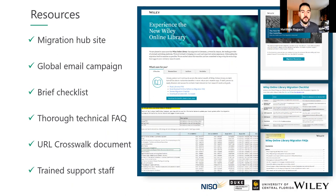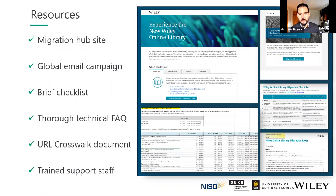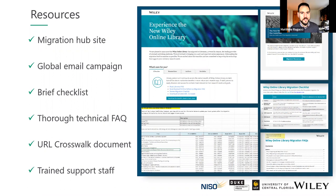The URL crosswalk document — which resembles a KBART file — provided information on linking syntaxes at a high level for things like table of contents, PDFs, full text HTMLs, and journal about pages, plus specific title-level information showing what the old URL looked like and what the new URL would look like. We also shared key information with library solutions vendors, including unique identifiers: DOIs, ISBNs, ISSNs, OCNs — providing transparency and helping mitigate post-migration linking issues. And we trained our global support staff so they were well-versed in everything before launch and could answer questions from librarians who had issues.